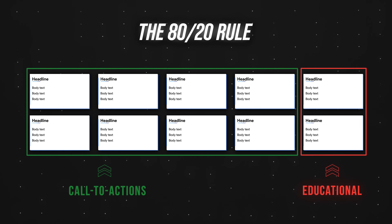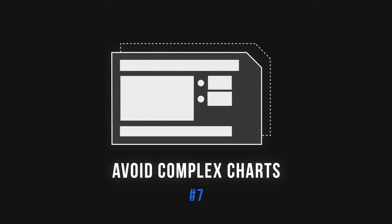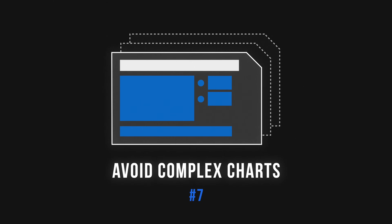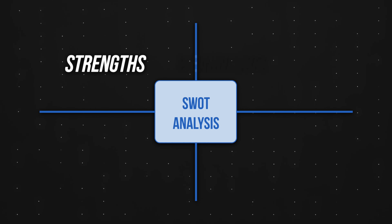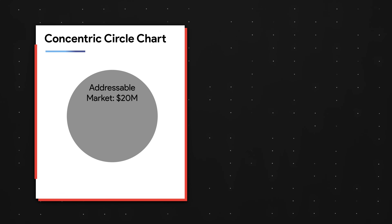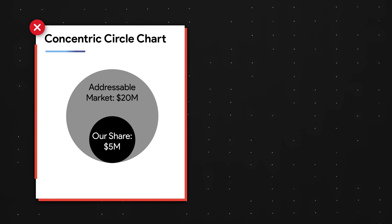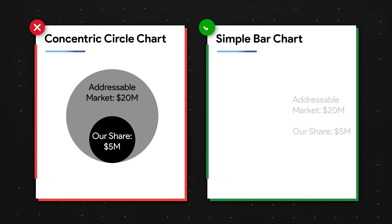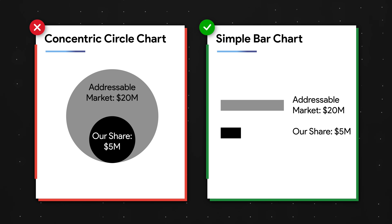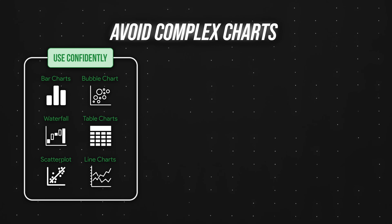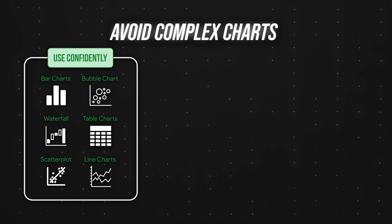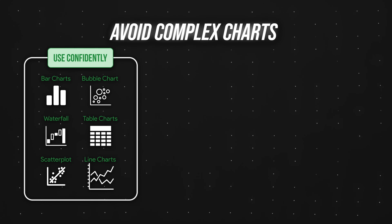Tactic number seven is super underrated: avoid complex charts. According to Harn, there are two reasons. First, most people get overwhelmed by anything more than a two-by-two matrix. Second, complex charts can be extremely misleading — for example, a concentric circle chart showing market share can look way bigger than it actually is compared to a simple bar chart. To help decide which charts to use, reference a chart-type table. Safe options include bar charts, bubble charts, waterfalls, table charts, scatter plots, and line charts.